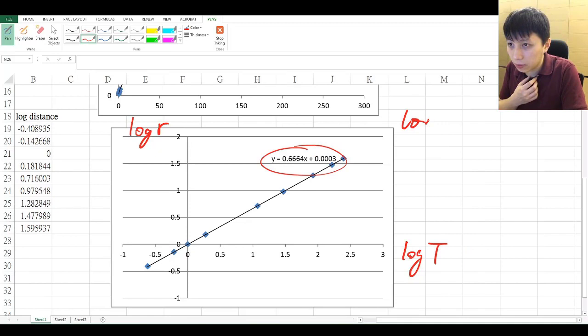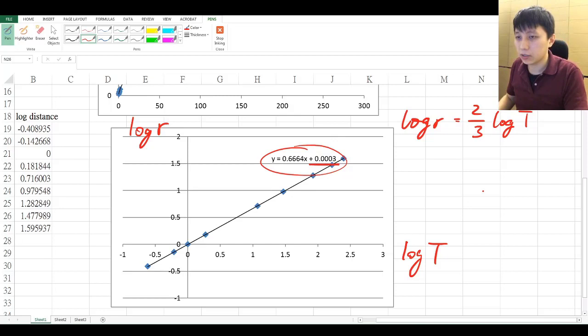This is basically 0. So, like how we showed earlier, then we can have log 3, log r equals to 2 log T, or you can see already quite obviously r to power 3 and T power to 2.